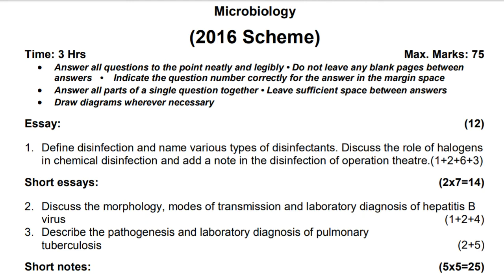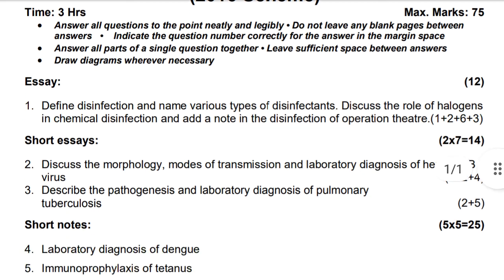Name various types of disinfections — one mark. Discuss the role of halogens in chemical disinfections — two marks. Add a note on disinfections — six marks. Total 12 marks for question number one.